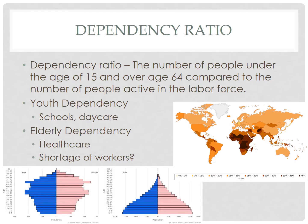Our final discussion point examines what are known as dependency ratios. These are the number of people under the age of 15 and over age 64 compared to the number of people active in the labor force. Basically, the dependency ratio is the number of people who need to be taken care of compared to the number of people to care for them. The most important point is that the higher the dependency ratio, the heavier the burden to support dependents.